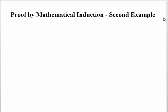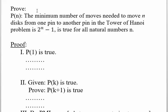Hello. In this video, I will do a second example of a proof by mathematical induction. This is the proof of the Tower of Hanoi formula, it's one of my favorites. This is the statement we're trying to prove. Prove statement P(n): The minimum number of moves needed to move n disks from one pin to another pin in the Tower of Hanoi problem is 2^n - 1, is true for all natural numbers n.